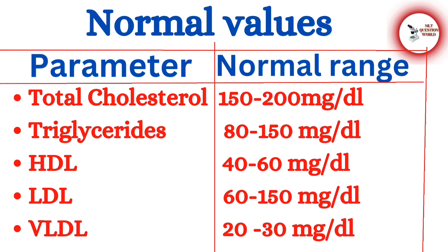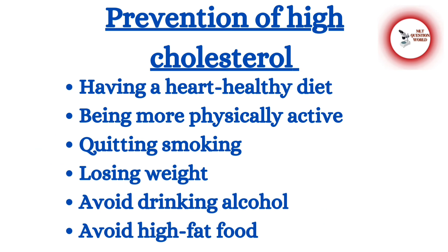The normal values are: total cholesterol 150–200 mg/dL, triglycerides 80–150 mg/dL, HDL 40–60 mg/dL, LDL 60–150 mg/dL, and VLDL 20–30 mg/dL. Not only total cholesterol, but all other parameters must be maintained at normal levels.